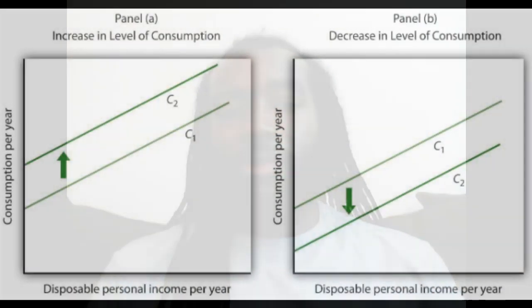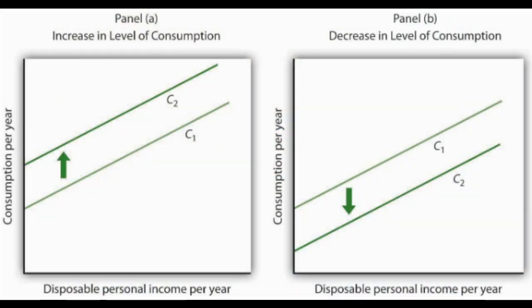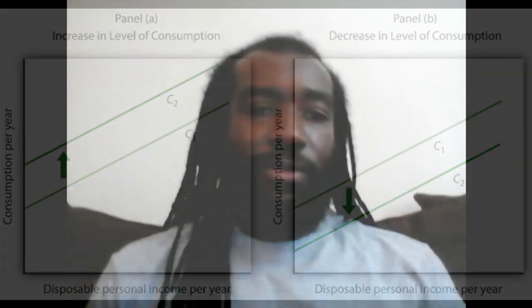Other factors determine the situation too, and may change how much households consume at any given amount of disposable income. For example, the wealth effect can cause households to consume more or less as their real wealth changes. Expectations about the future can also cause households to save or consume more, and fortunately those expectations can become self-fulfilling.